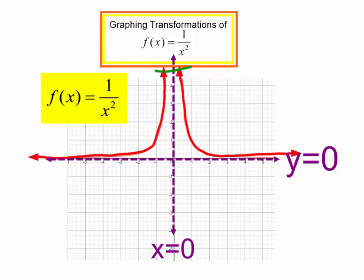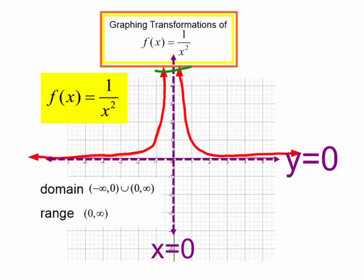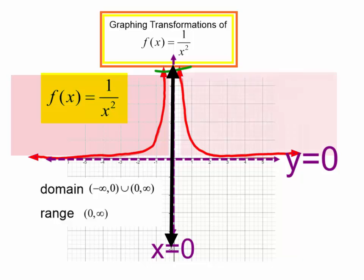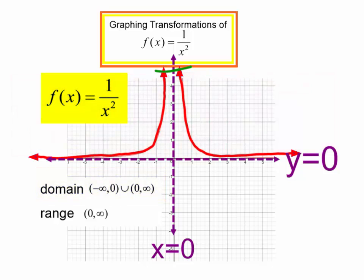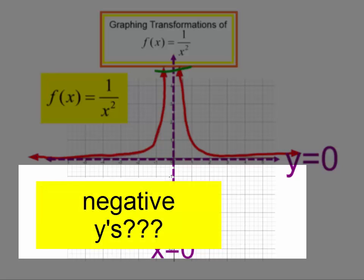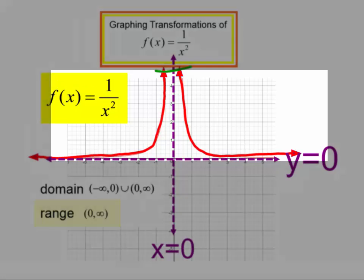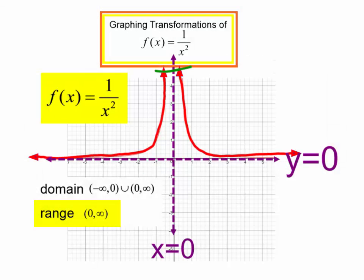Let's talk about the domain and the range of this graph. The domain — it seems like my x's are included from negative infinity, but I've got to take a break at 0 because it's undefined there. Then the domain starts again right after 0 to positive infinity. What about the range? There aren't any y's that are negative. The y's do not start until right after 0, and it goes from 0 to infinity. 0 is not included — it never really touches y equals 0, which is why I have a parenthesis.